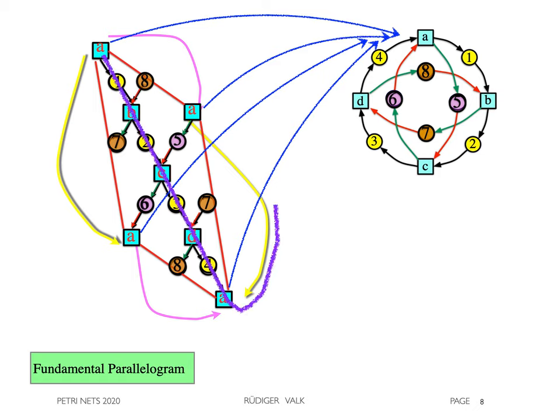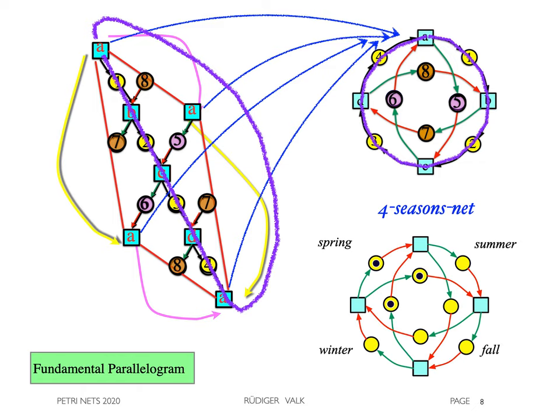For instance, we recognize that the path A, B, C, D, A becomes a cycle in the folding. We obtain a net structure, the four seasons net.